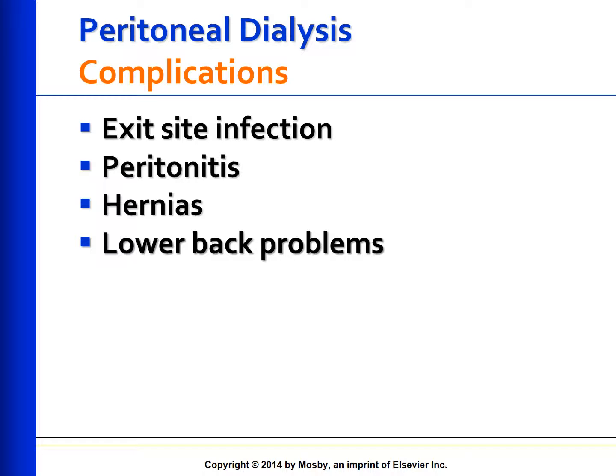Peritonitis results from contamination or from progression of an exit site or tunnel infection. It can also result from improper technique in making or breaking connections for exchanges. Clinical manifestations include abdominal pain, cloudy peritoneal effluent, elevated white cell count, positive culture of the peritoneal fluid, and GI symptoms such as nausea, vomiting, diarrhea, abdominal distension, and hyperactive bowel sounds. Fever may or may not be present.